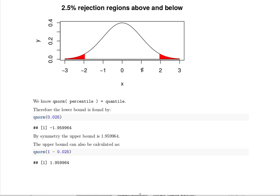So the upper bound could also be calculated as the qnorm of, well this area is, this probability is 0.025. So 1 minus that area would be this area below. And so the qnorm of 1 minus 0.025 will give us this quantile. So two ways of finding this upper bound.